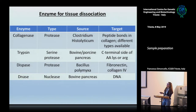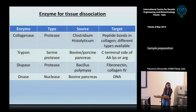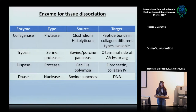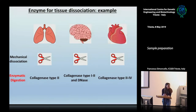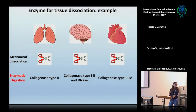Another enzyme you can use is trypsin; it is a serine protease useful for a softer dissociation. Remember that during your procedure, when you prepare your tissue, you will always get some dying cells. These cells release DNA, and DNA is sticky. So if you want to obtain a single cell suspension, you can also add DNase — which is a nuclease — to your samples in order to remove the DNA. Nowadays, different types of enzymes are commercially available, so always check the literature to determine which is the best procedure for the preparation of your specific tissue.